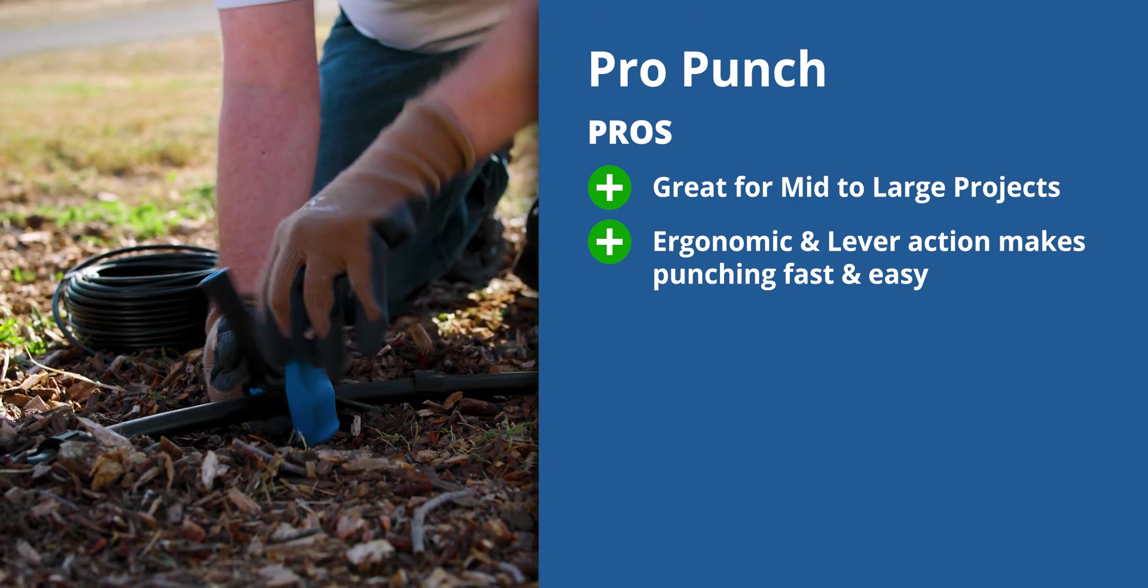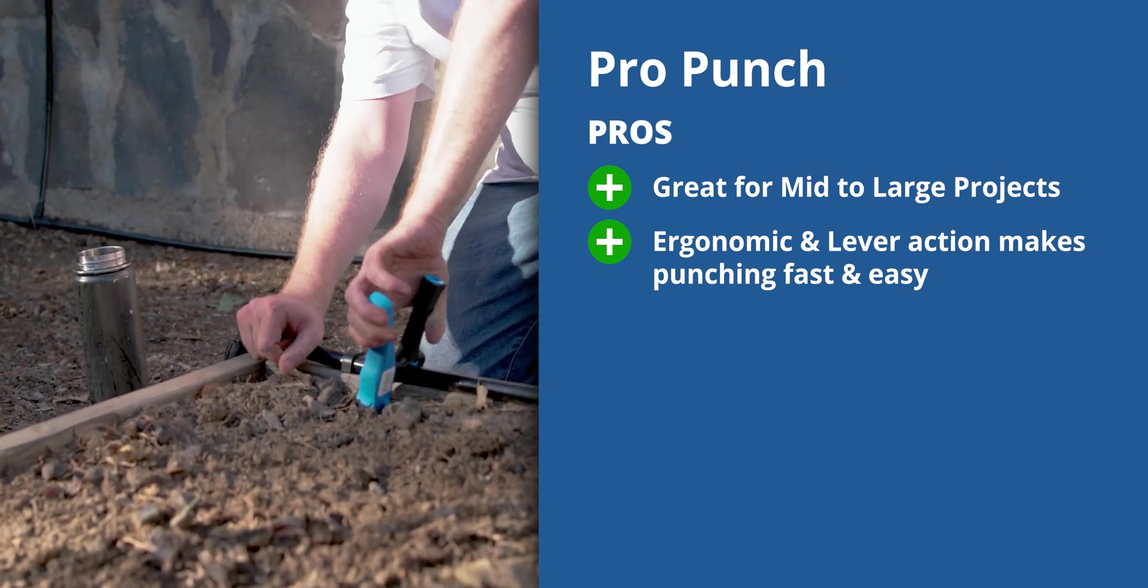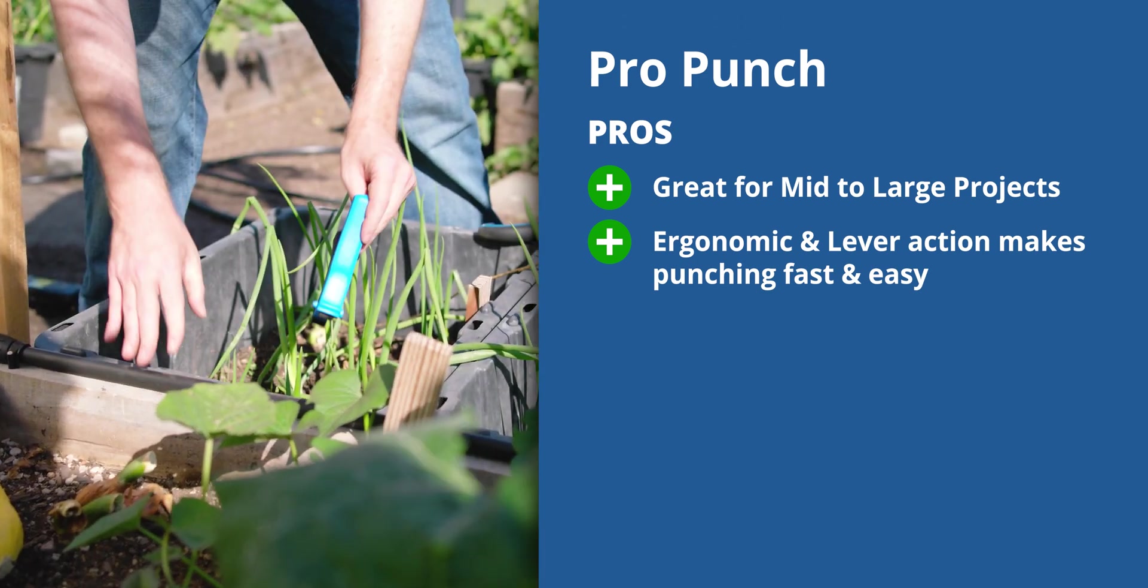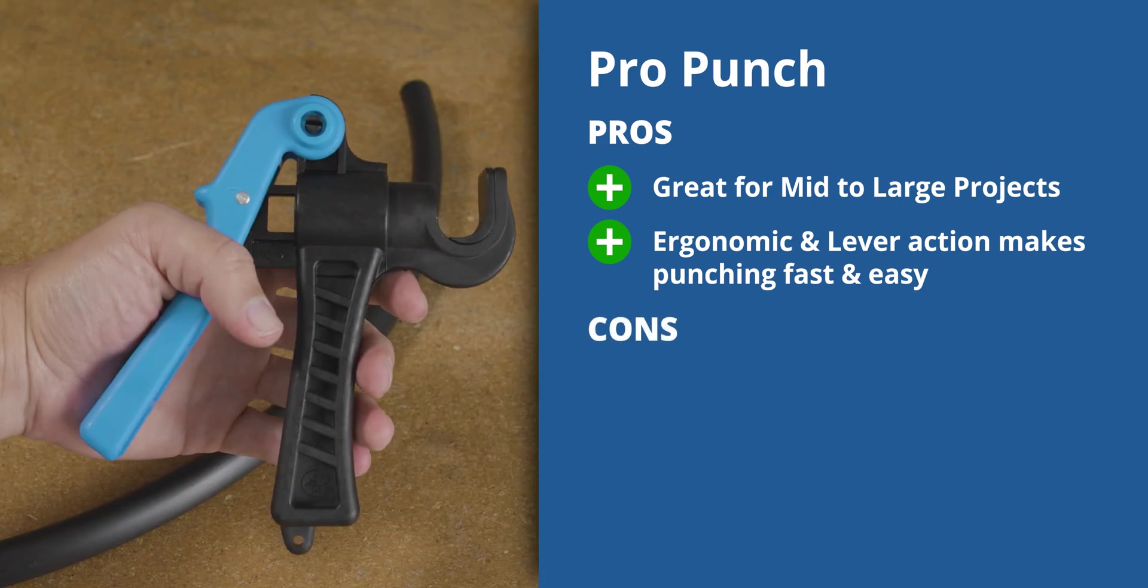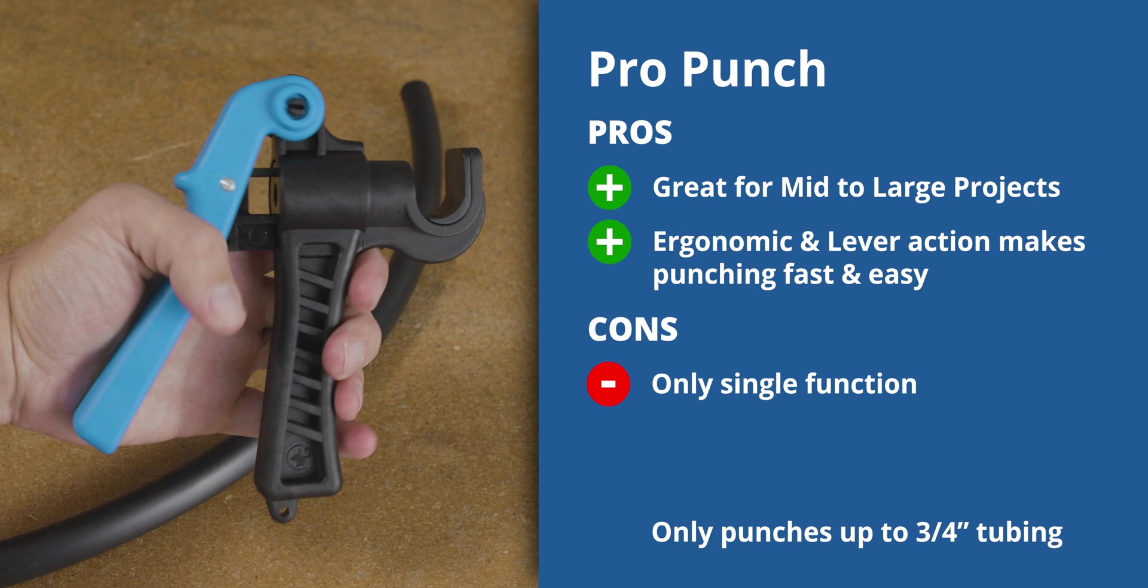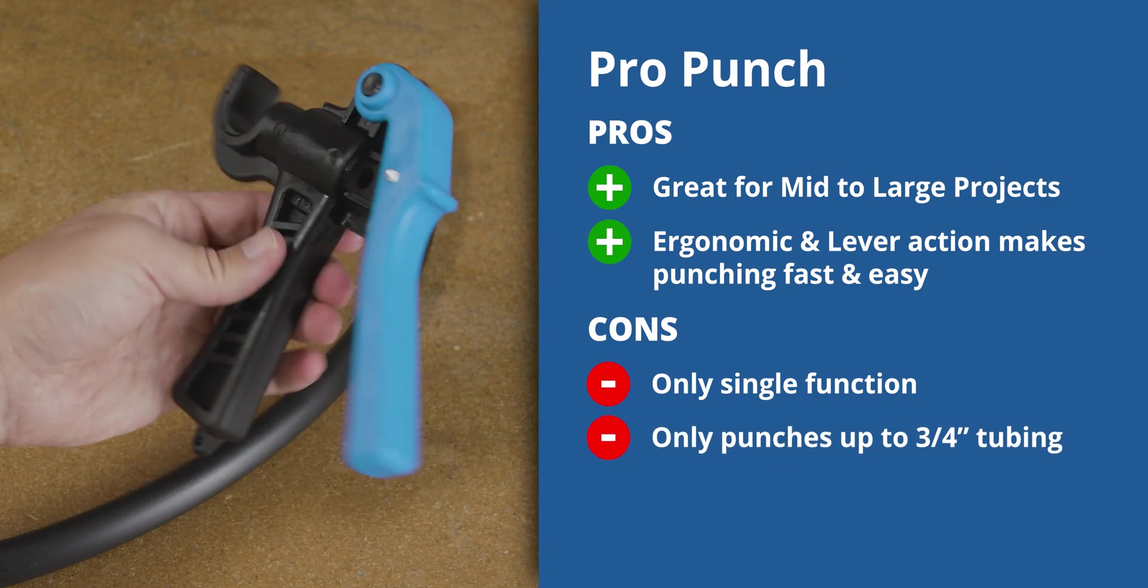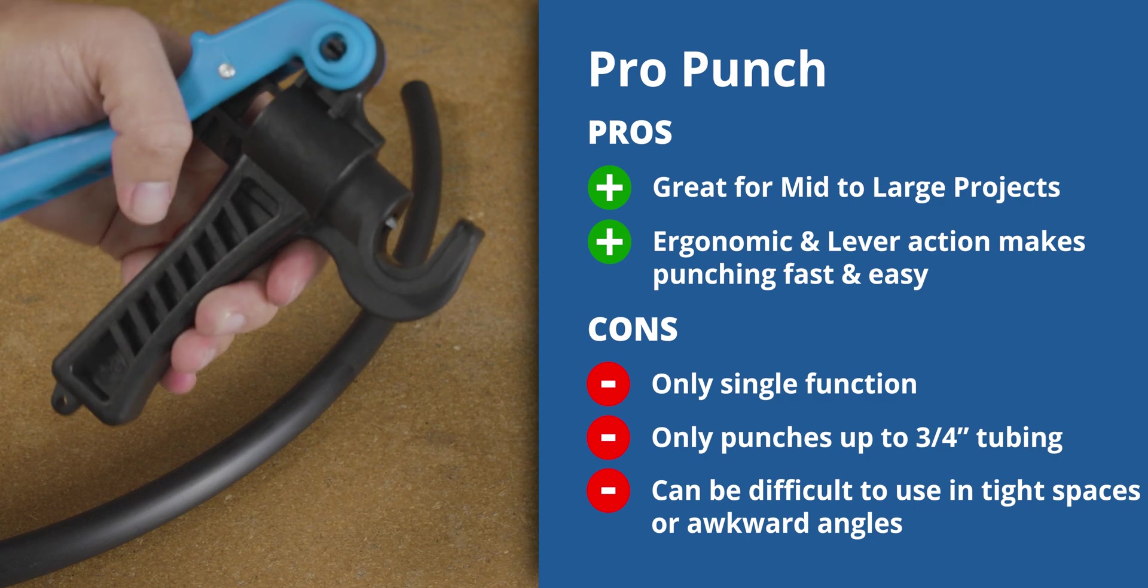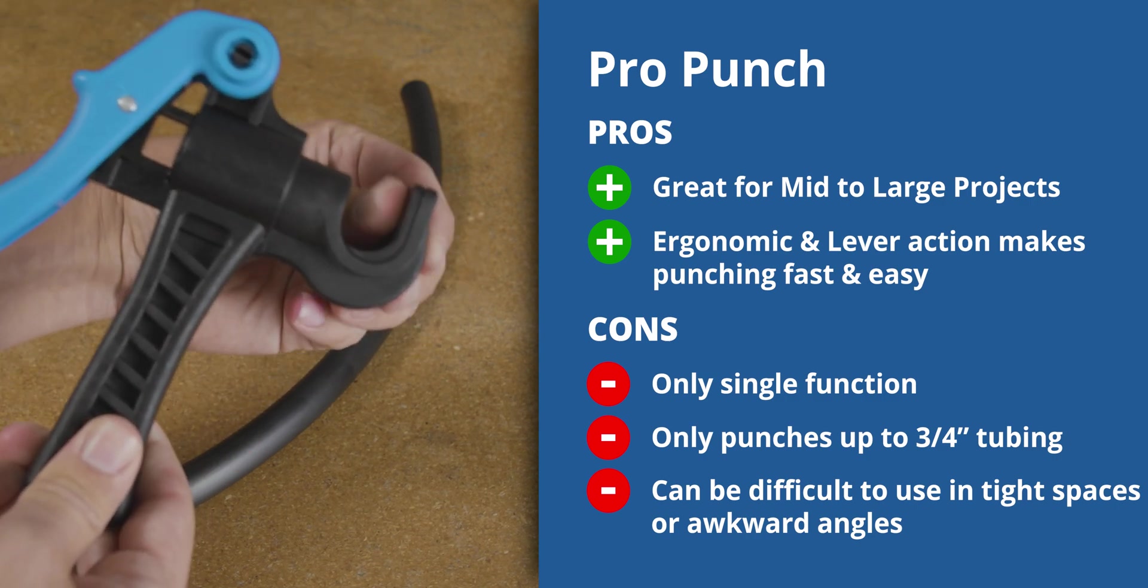It's on the higher end of punches, so if you're just punching a few holes, there might be a better punch for you. But if you're punching many or have diminished hand strength, the Pro Punch could be the best route for you to go. The only downsides to this punch is that it's only a single function, can only work with up to three-quarter inch poly tubing, and can be a little bit difficult to use in tight spaces. You'll also need to buy this in conjunction with another tool to get the most help during your installation.